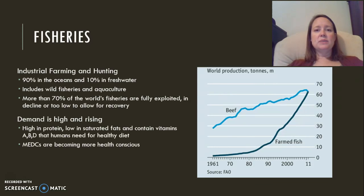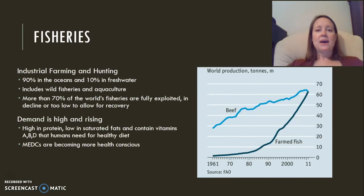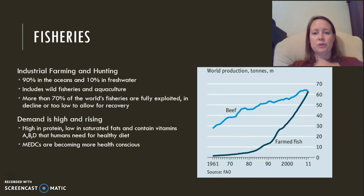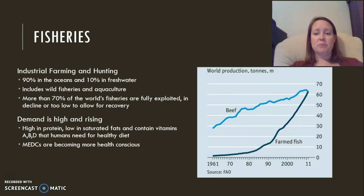In more economically developed countries, individuals are becoming more health-conscious, so diets are including more and more fish as a healthy way to get protein compared to beef. The graph at the bottom right shows world food production of beef compared to farmed fish, and fish production has actually risen to where it equals levels of beef.